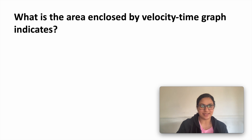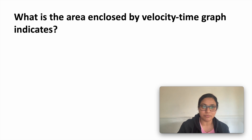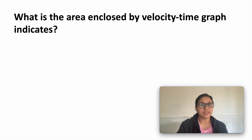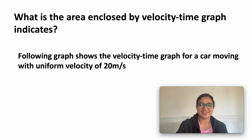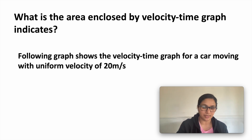The next question is: what is the area enclosed by a velocity-time graph? As I mentioned earlier, you can also determine the distance moved by the car from its velocity-time graph. The following graph shows the velocity-time graph for a car moving with a uniform velocity of 20 meters per second.